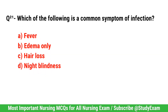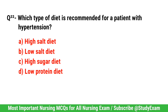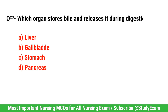Question No. 21. Which type of diet is recommended for a patient with hypertension? Correct option is B. Low salt diet.